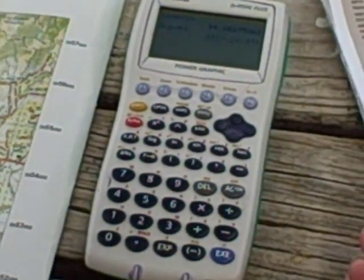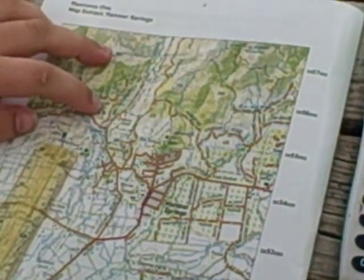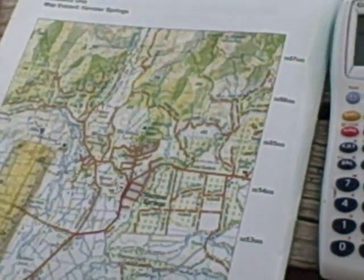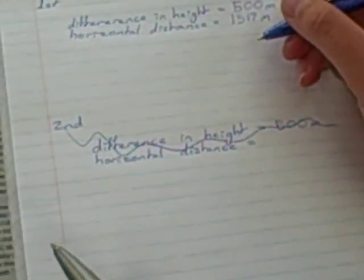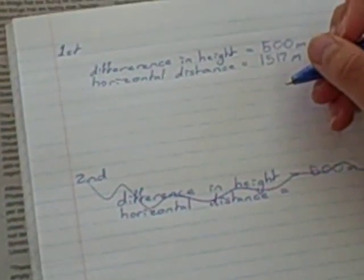Right, so now we have the information we need to calculate the angle between these two points. So we need, the formula is the difference in height, divided by the horizontal distance.